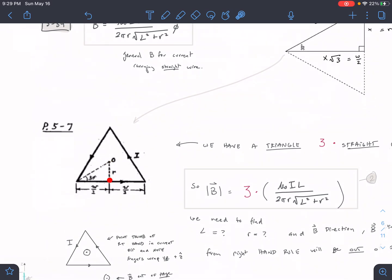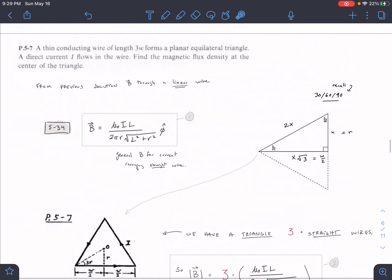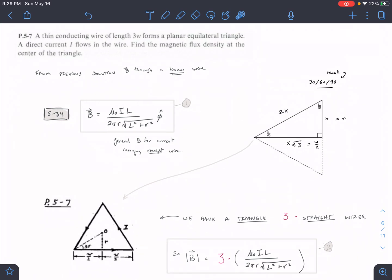So we have three sides. We have our r coming from the center of the point, from the center midpoint where we're measuring to the wire. So r to the middle, and then each of these is going to be equal to l, so l is equal to w over 2. Because in this case, it gave us 3w for the total length of all the triangle sides.